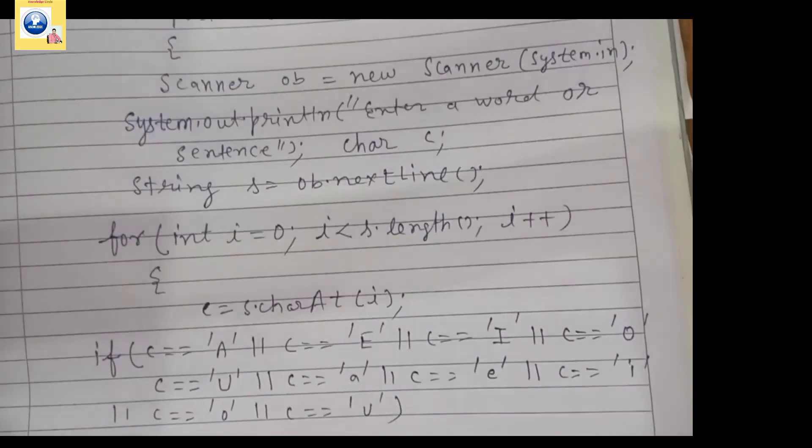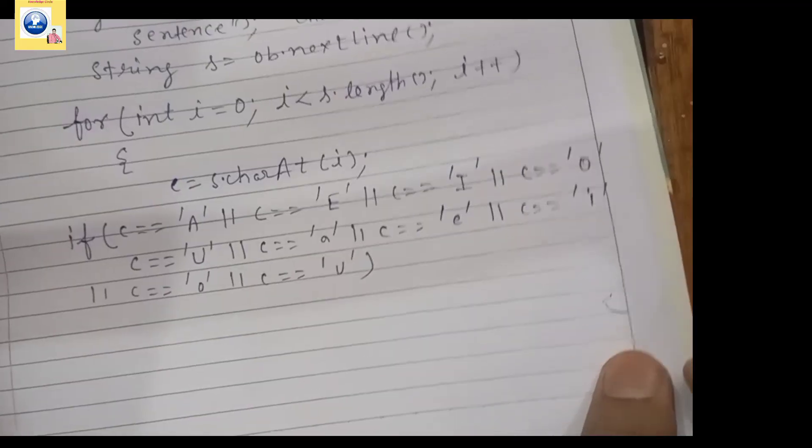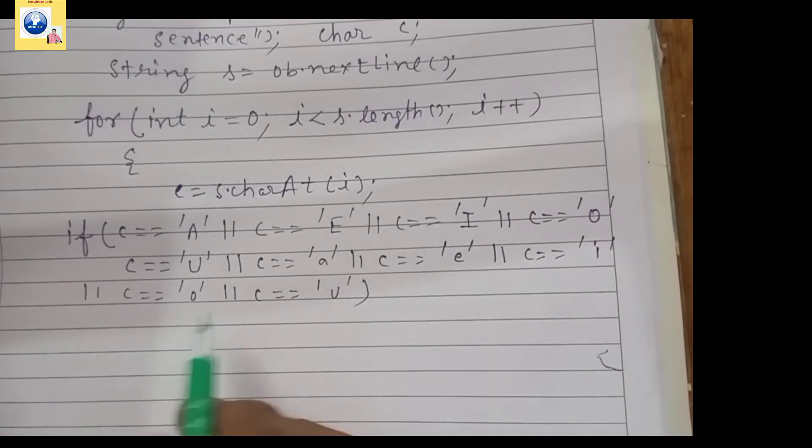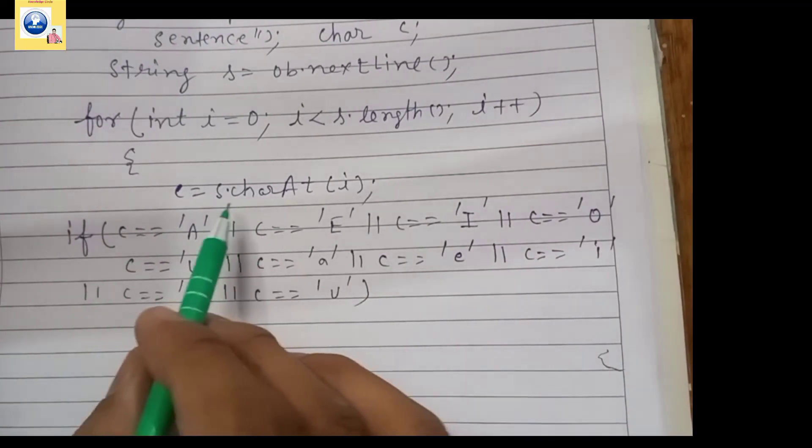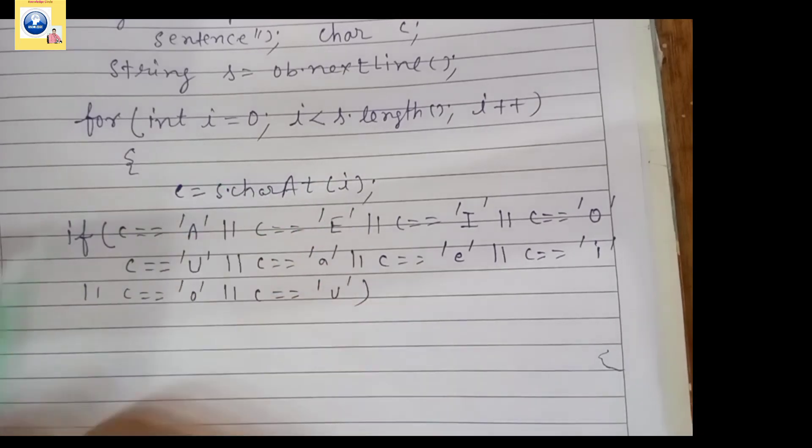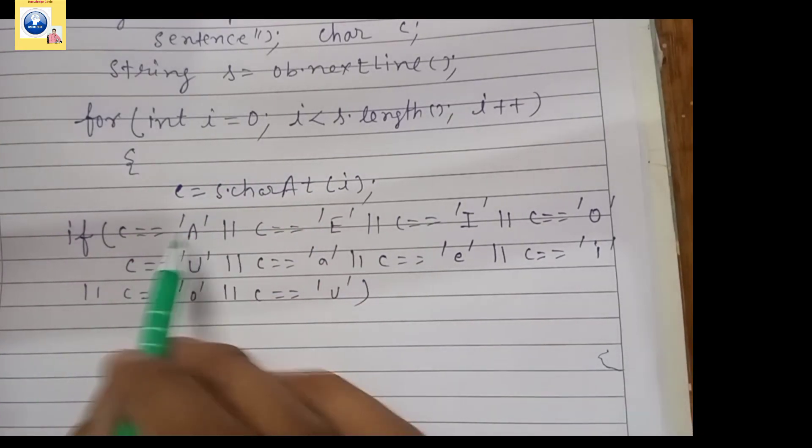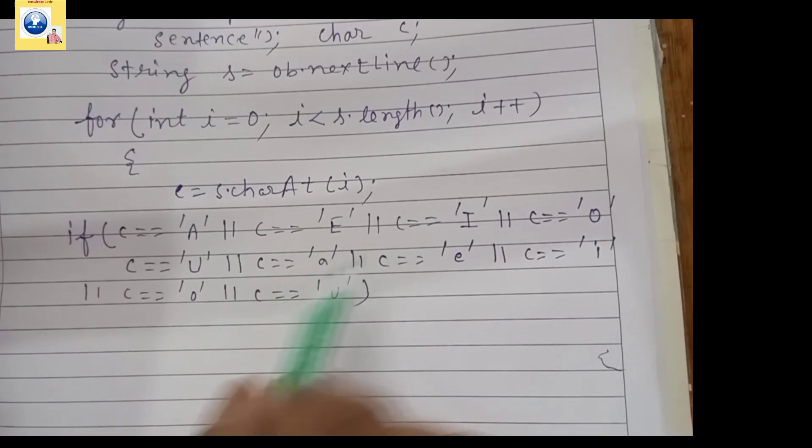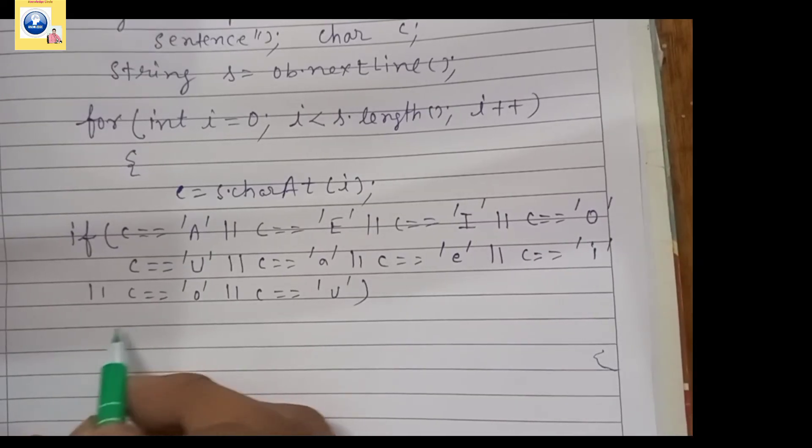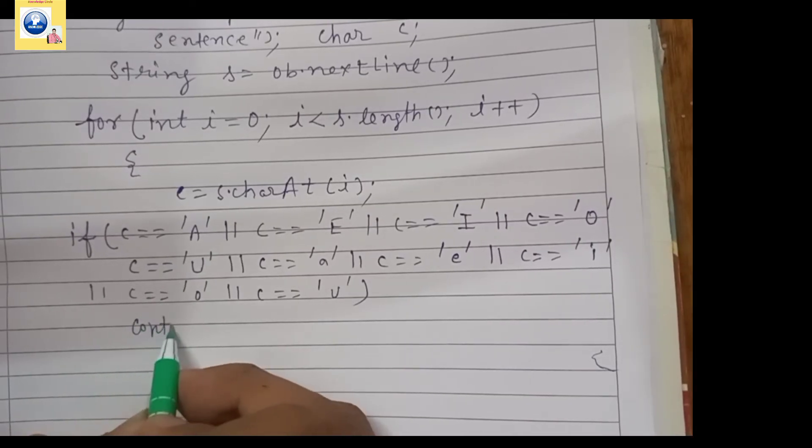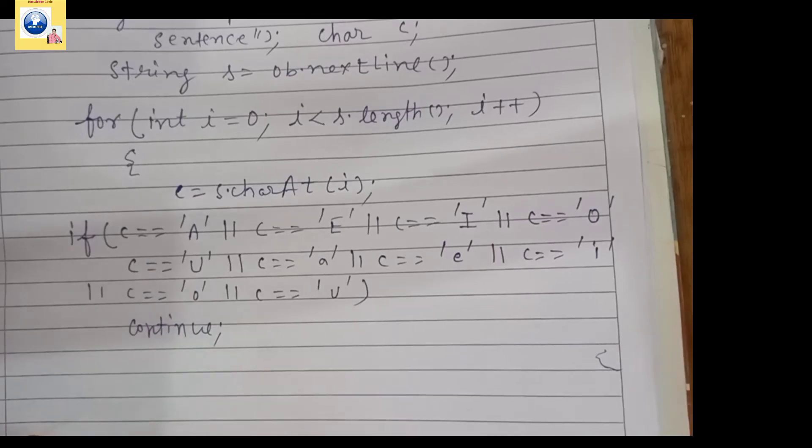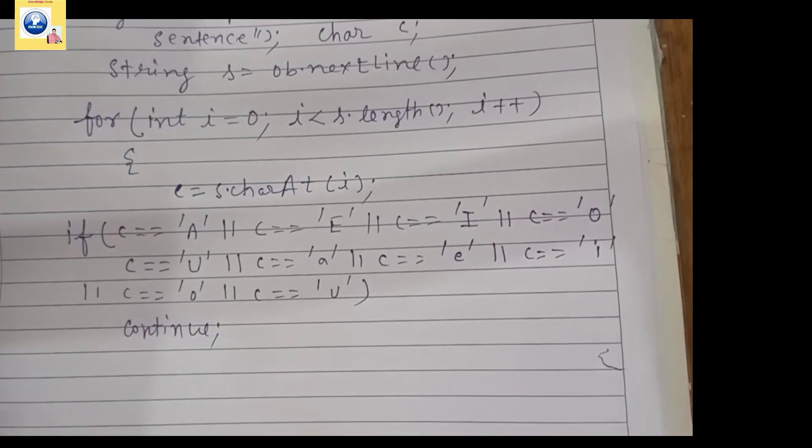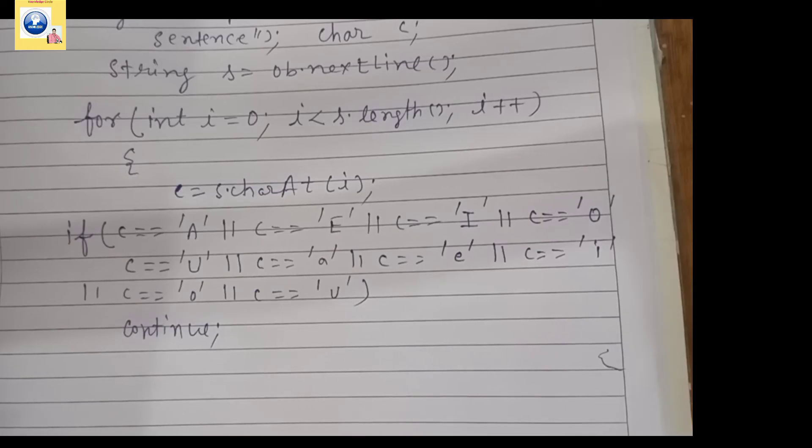What we have to do is we have to see that if the value extracted at a particular position is a vowel, whether it is a capital vowel or a small vowel, it should be continued. Continue is a jump statement which skips the statements written after it and takes the control back to the next iteration.